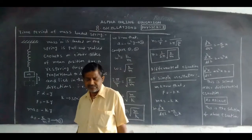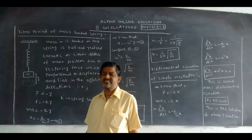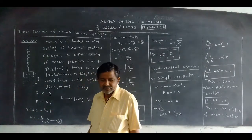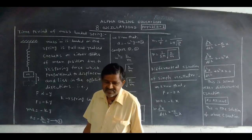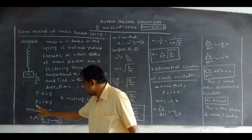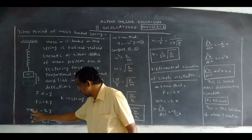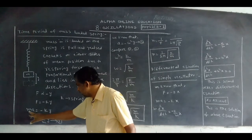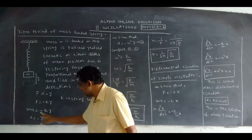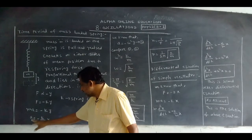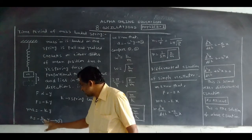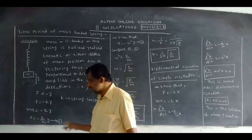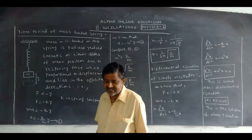We know from Newton's second law that F = MA. Writing F in place of F, we get MA = -KY. Taking M to the denominator, we get A = -(K/M) × Y. Take this as equation 1.